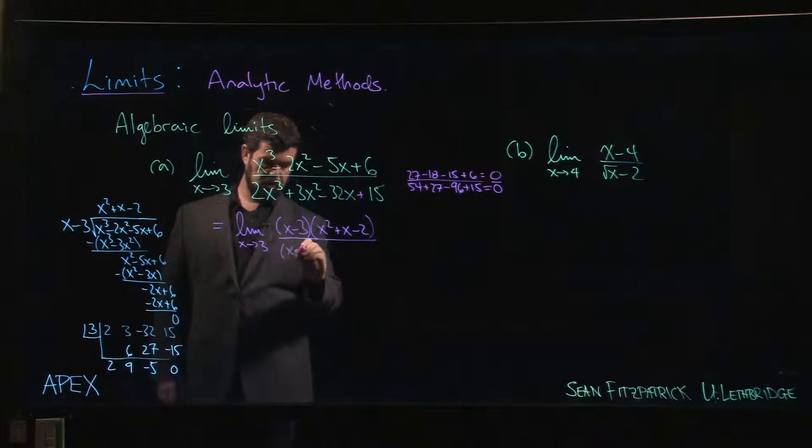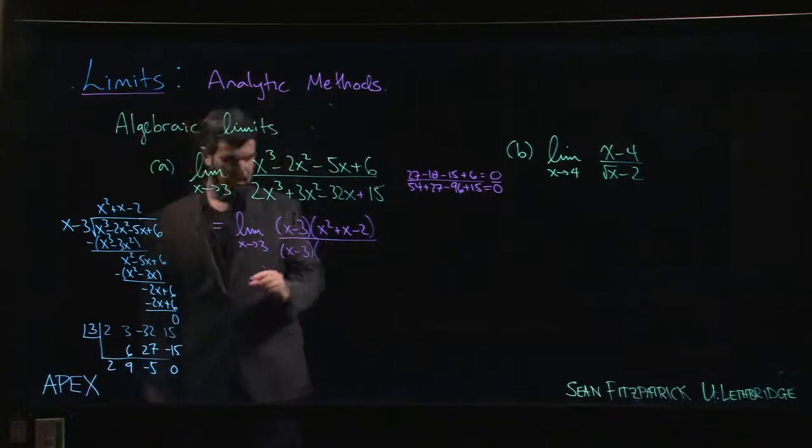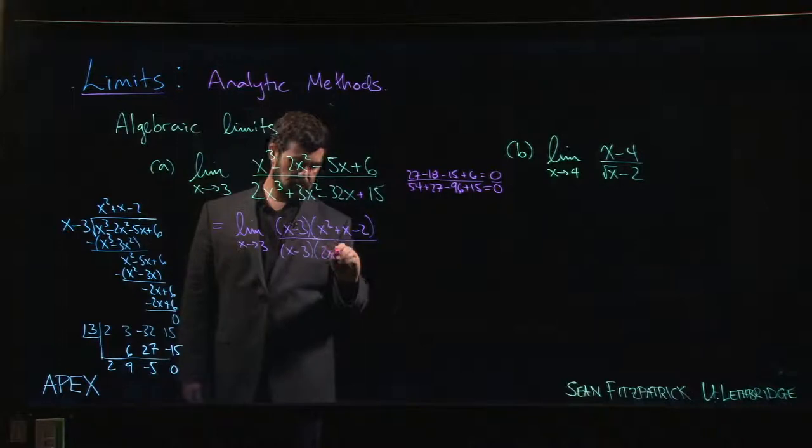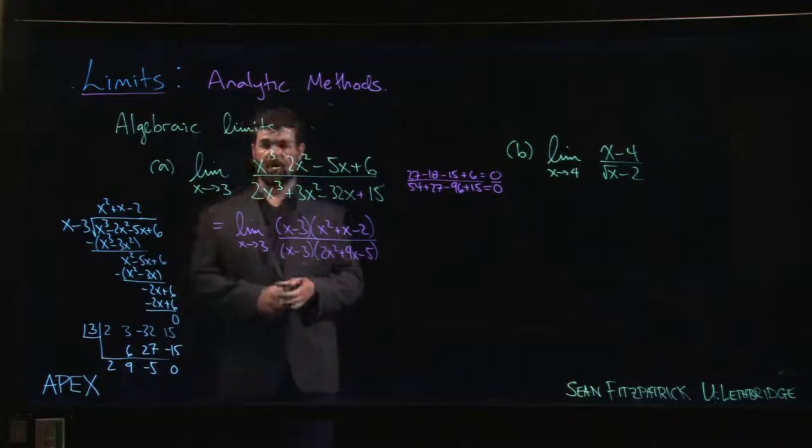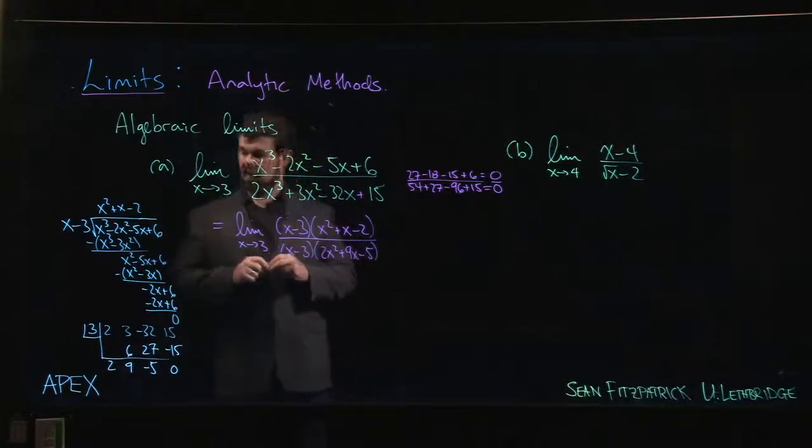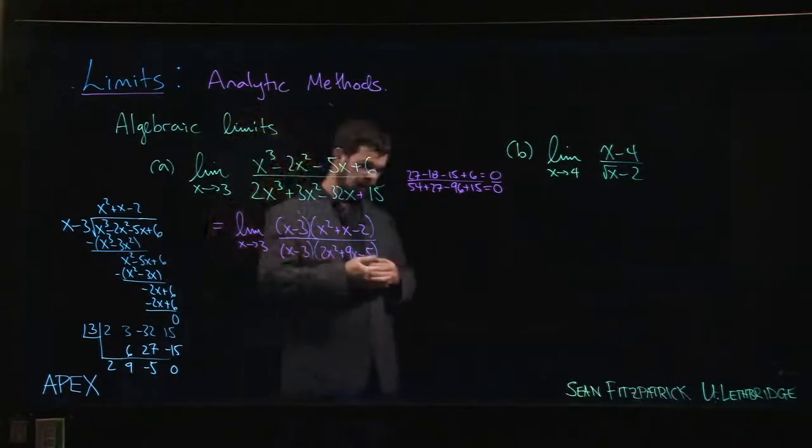So now I know that once the x minus 3 comes out, the remaining factor is 2x squared plus 9x minus 5. Right, this time using synthetic division.